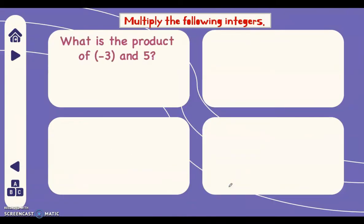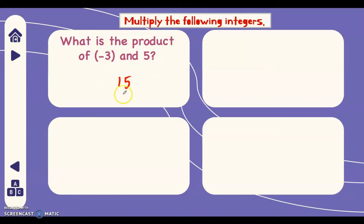Let's have more examples. What is the product of negative 3 and 5? We multiply 3 and 5 which is 15. How about the sign? There is only one negative integer — that's odd — therefore the sign of the answer is negative.